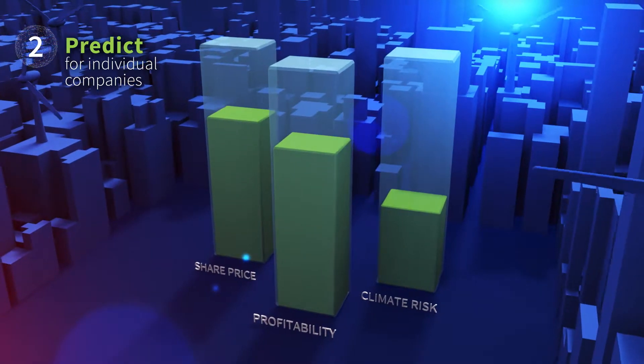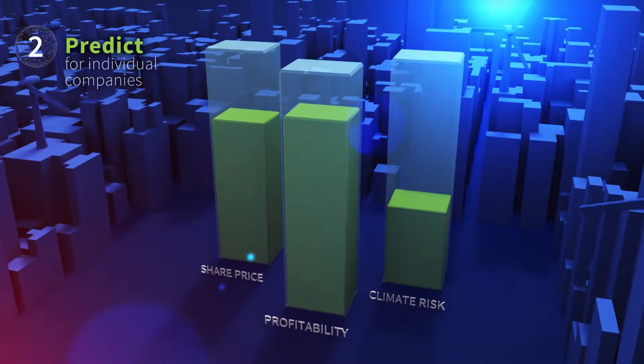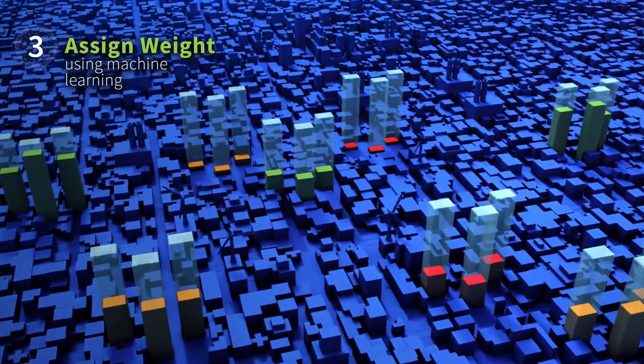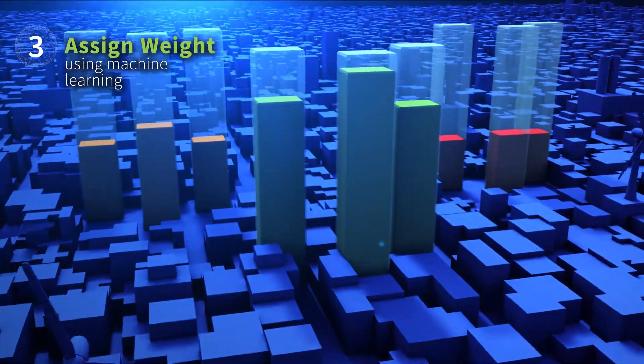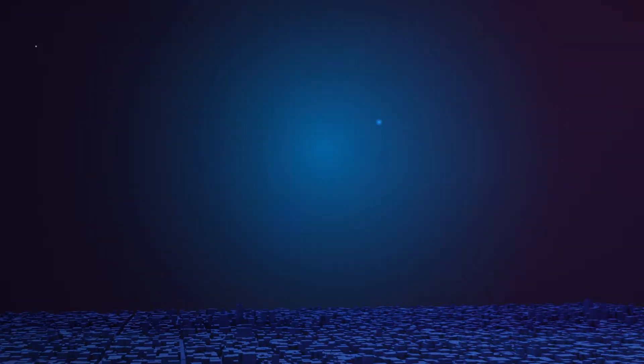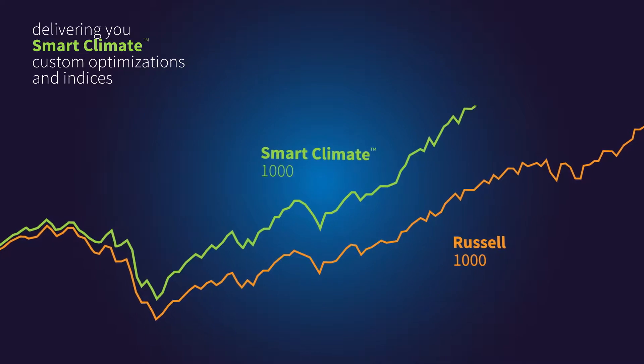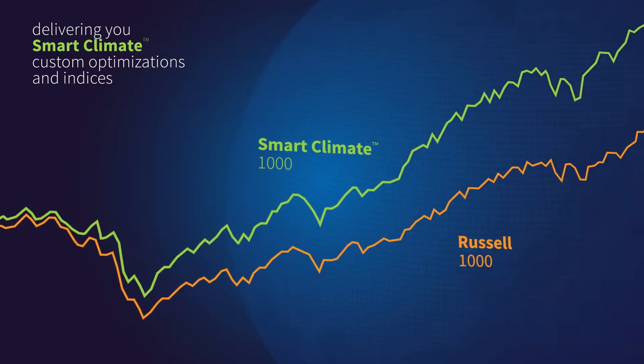Then we predict profitability, share price performance, and exposure to climate risk for individual companies. Finally, we use machine learning to prioritize companies showing the least exposure to high-risk carbon emission scenarios, delivering you Smart Climate custom optimizations and indices to help improve your portfolio's risk-return ratios.